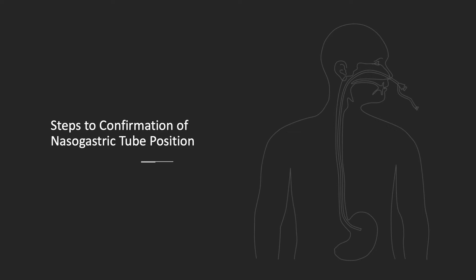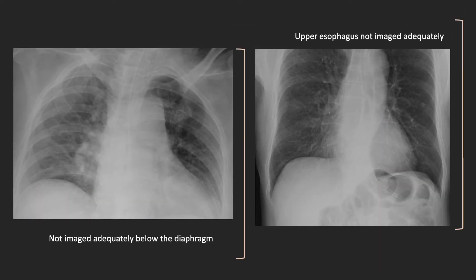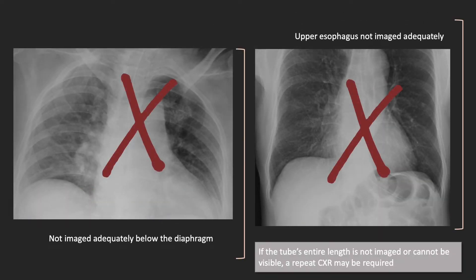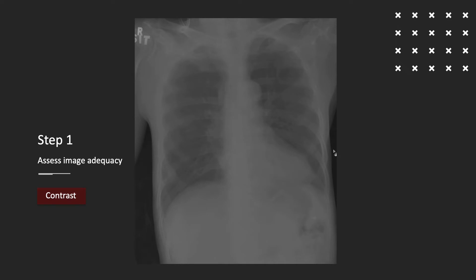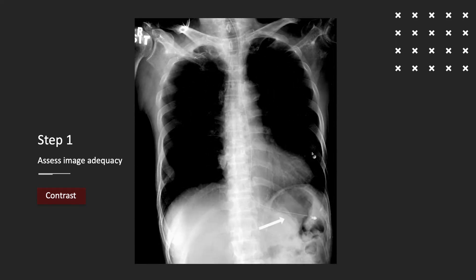Here is a step-by-step guide to confirmation of a normal nasogastric tube position. Firstly, determine whether the chest x-ray covers the adequate region of interest, from the upper esophagus to below the diaphragm. The tube should be clearly visible throughout its length, including to its tip. In some cases, you may have to manually adjust the window setting to increase the conspicuity of the tube.